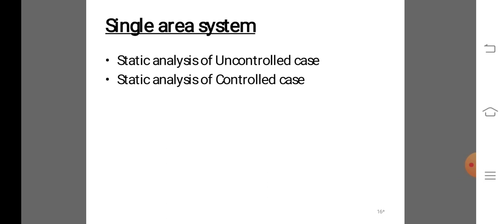AGC is the automatic governor control system. Its function is to bring the frequency to the nominal value. This is achieved using the supplementary loop, which uses an integral controller to change the reference power setting.